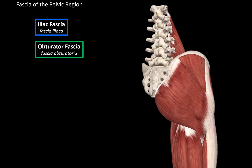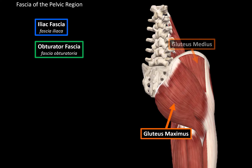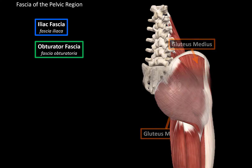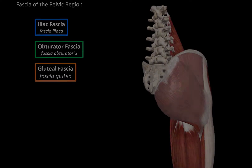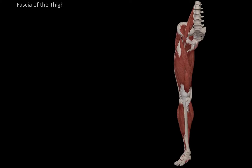Now let's take a look at the gluteal region. There's a fascia that covers the gluteus maximus and the gluteus medius. This fascia surrounds these two muscles, and it is called the gluteal fascia. So that was the main fascia to cover in the pelvic region.